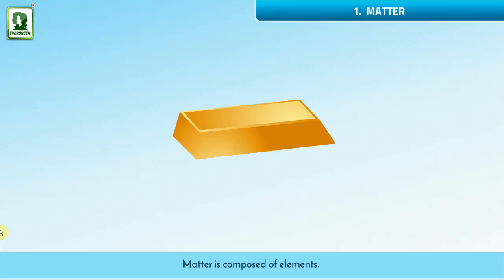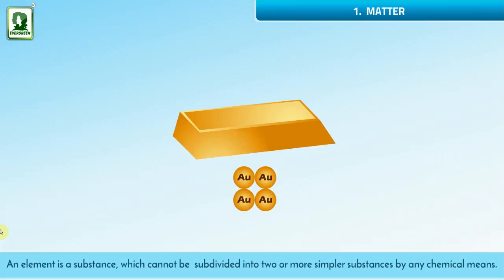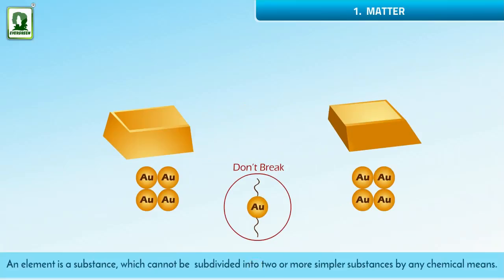Matter is composed of elements. An element is a substance which cannot be subdivided into two or more simpler substances by any chemical means.